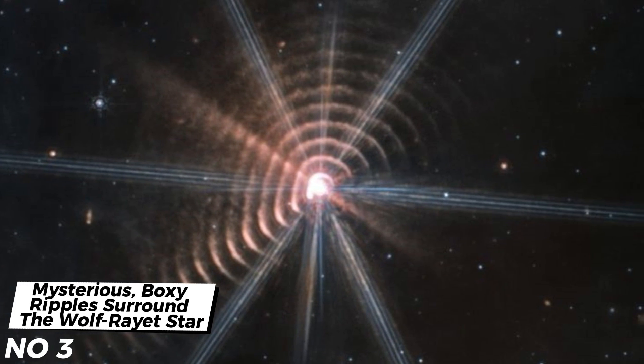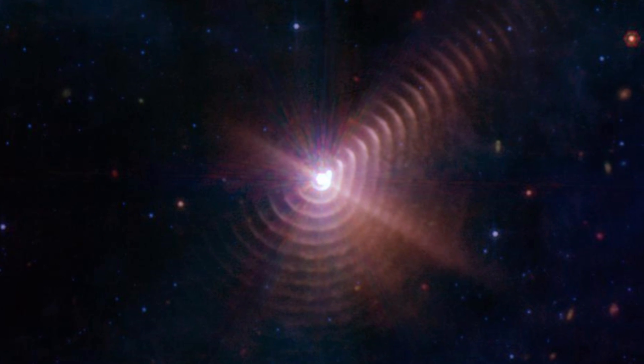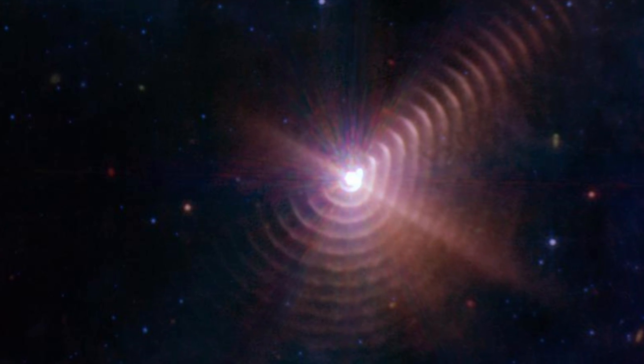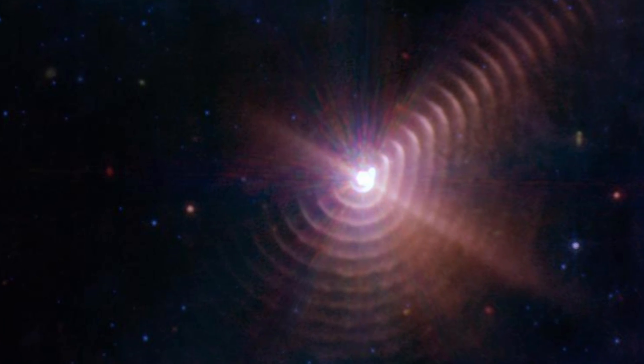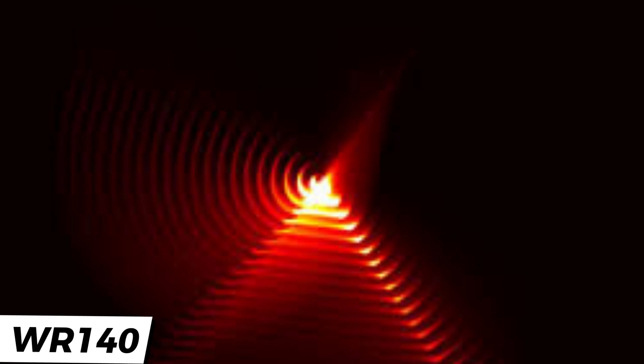Number 3: Mysterious Boxy Ripples Surround the Wolf-Rayet Star. In July, Webb took an image of a distant star called Wolf-Rayet Star, which featured Webb's signature diffraction pattern, an imaging artifact. However, researchers detected something mysterious in the image. Around the star, called WR-140, is a pattern that looks unreal. A ripple-like pattern of concentric rings with an odd, slightly boxy shape. In contrast to the diffraction pattern, the strangely shaped rings are real features.